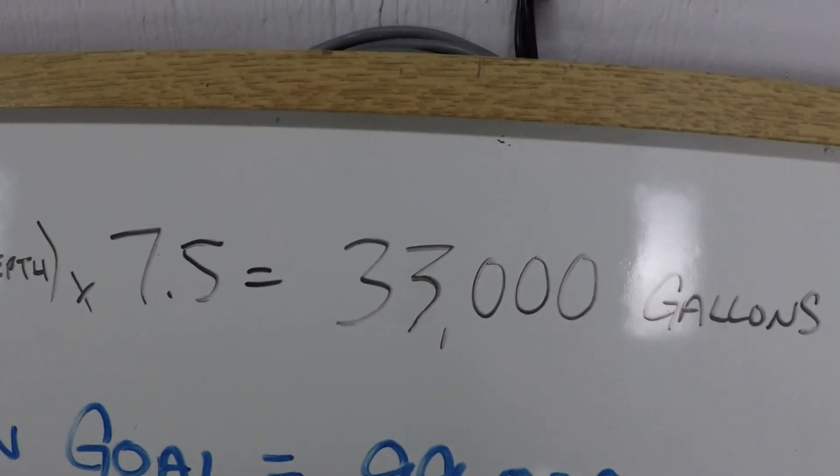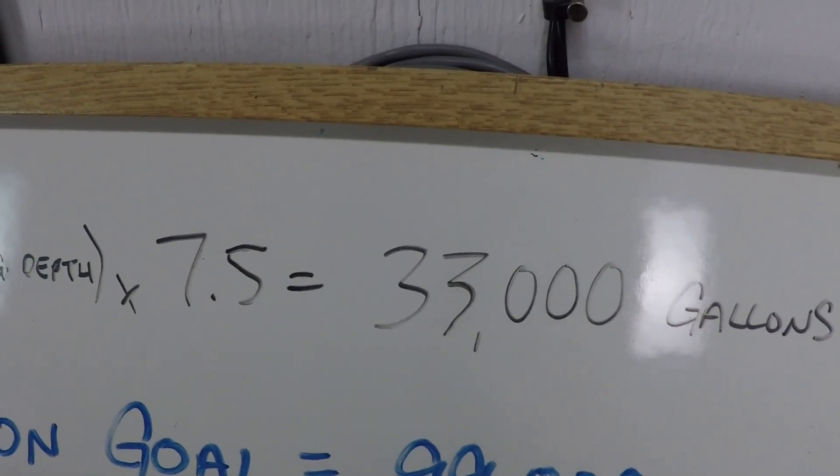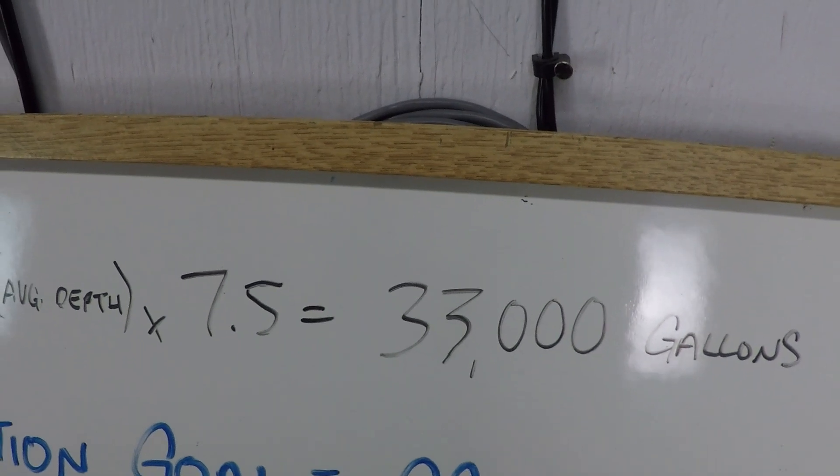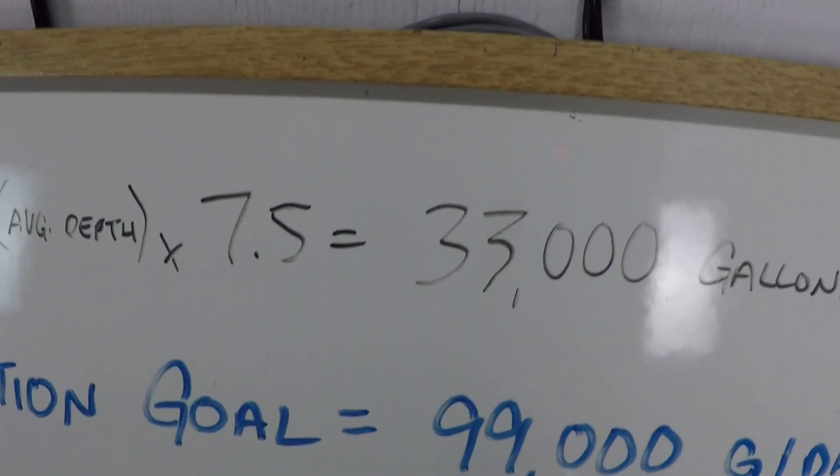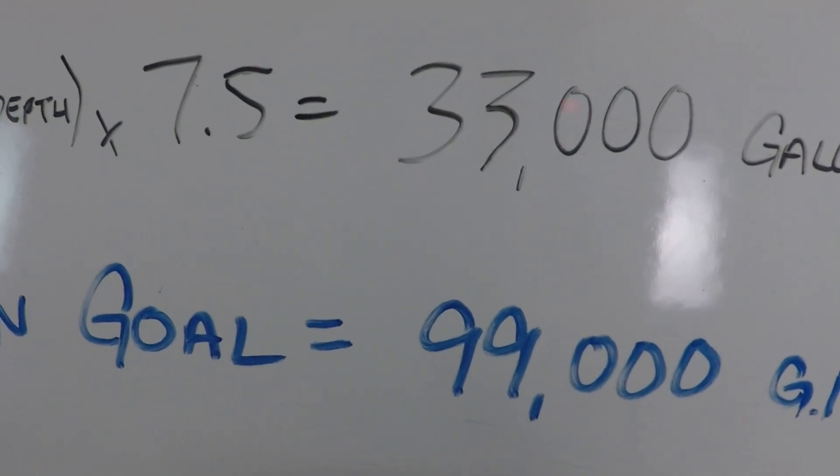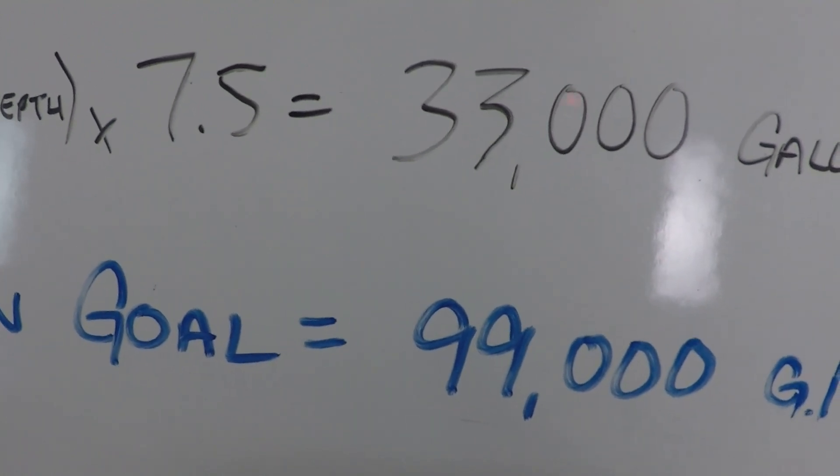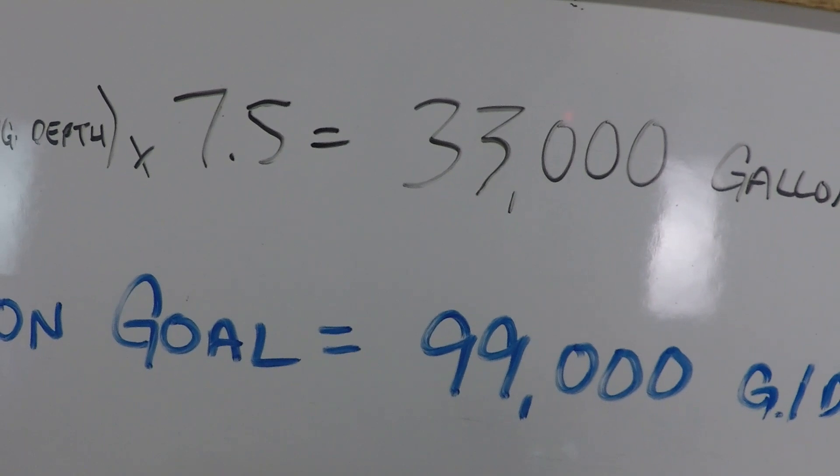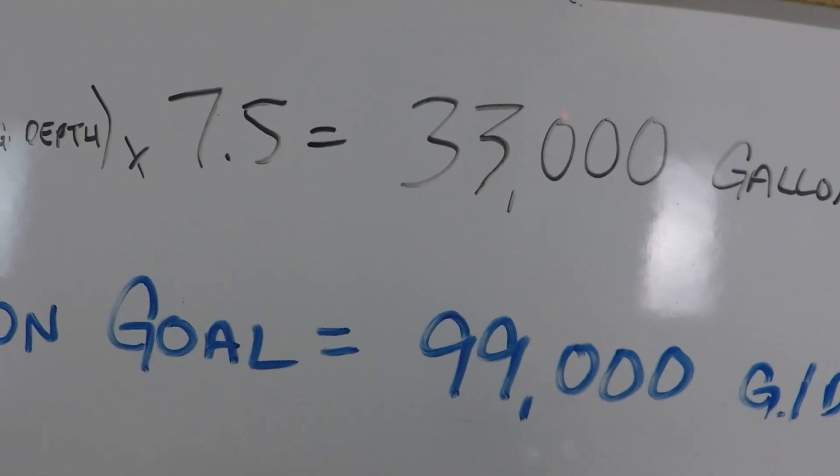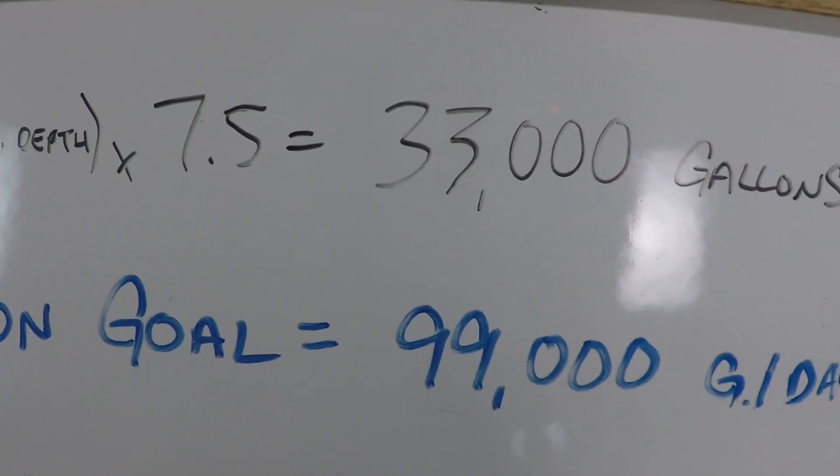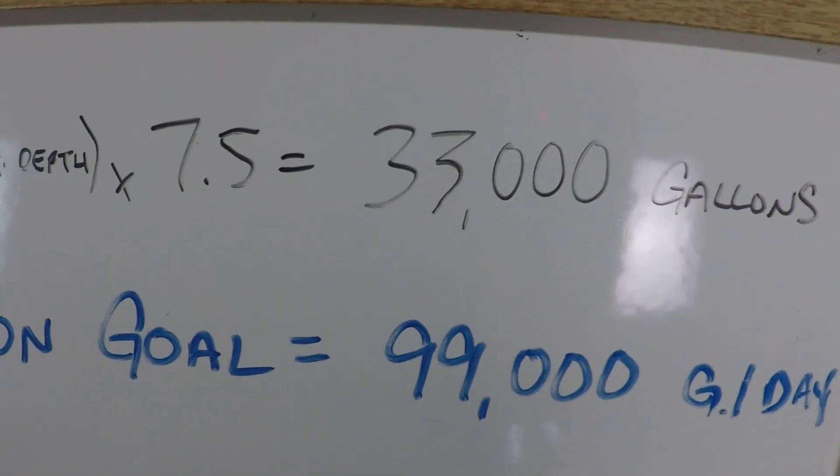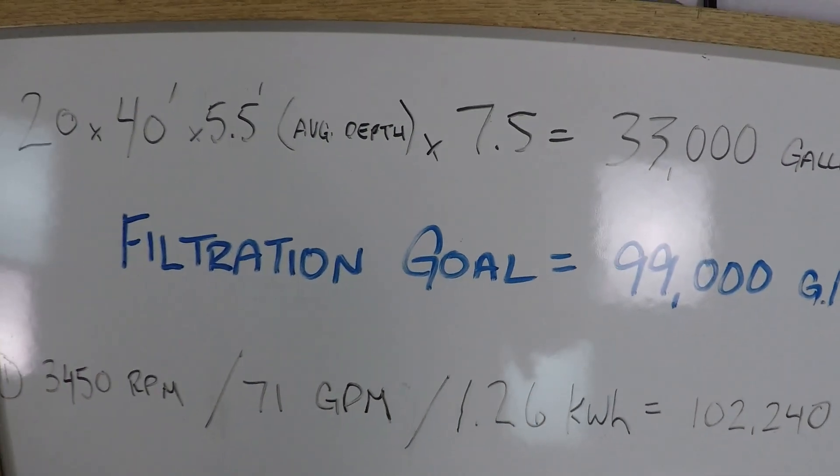If you only filter 33,000 gallons in a day, you don't actually get all of the water. Some of it gets done twice or three times and a lot of it doesn't get done at all. By the time you filter three times the volume of the pool, you're achieving approximately 95% of all of the water in your pool being filtered at least one time. So for this example, we're going to call this the minimum amount of filtration that we're aiming for, 99,000 gallons.